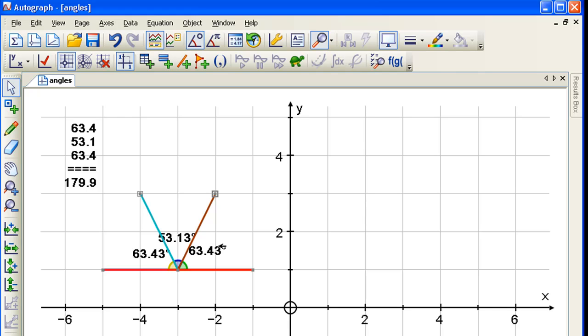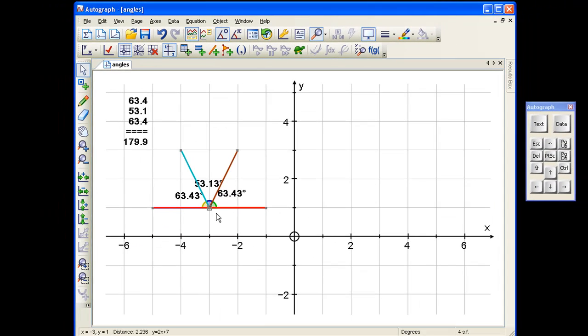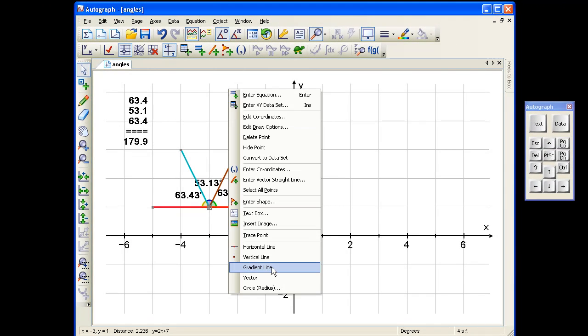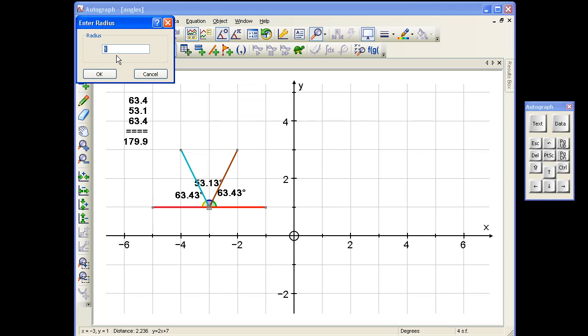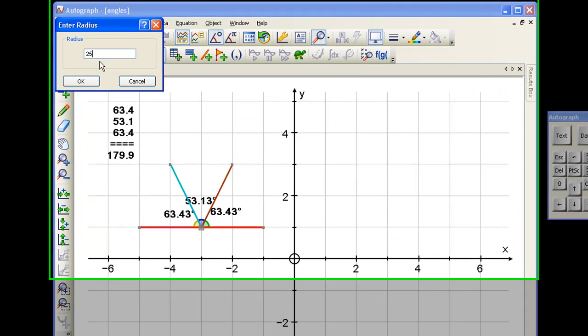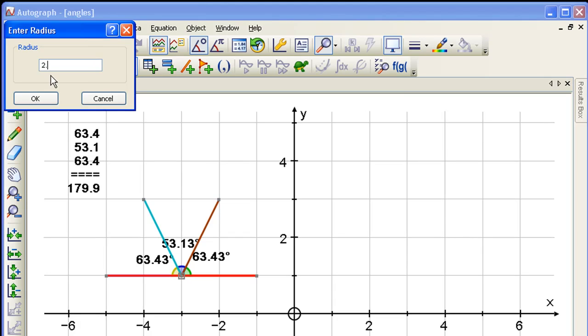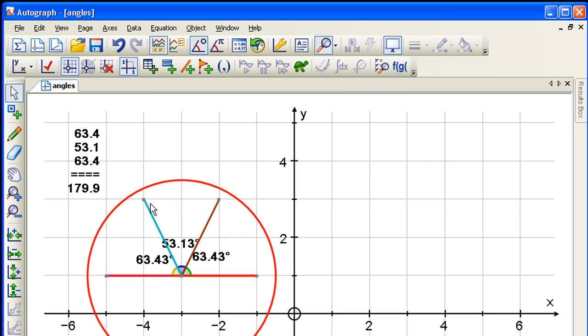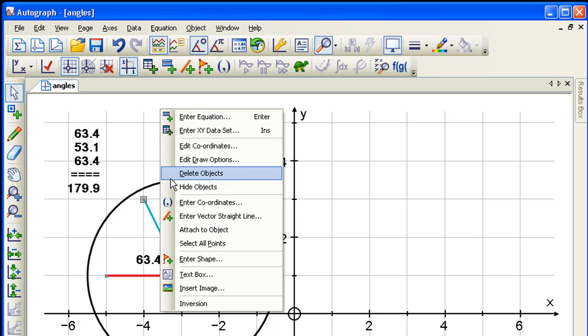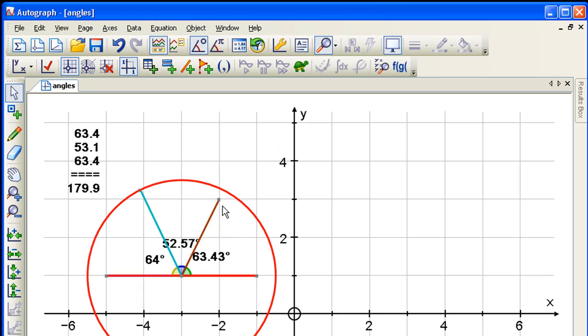What we need to do is get it set up so that you can actually measure correct angles. The simplest way to do that in Autograph is to select this point and then right-click, draw a circle of radius say 2.5, and then we'll just attach these points to that circle. Select that, select that, and right-click attach. Select and select and right-click attach.